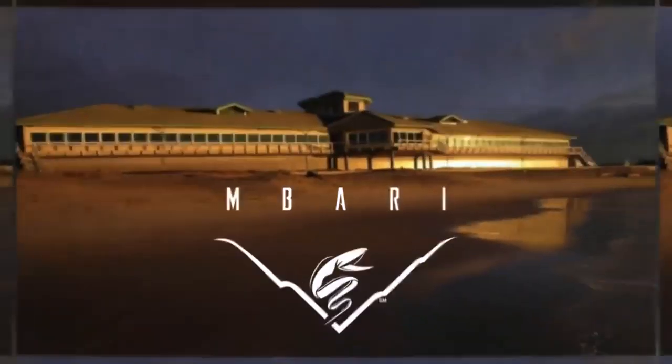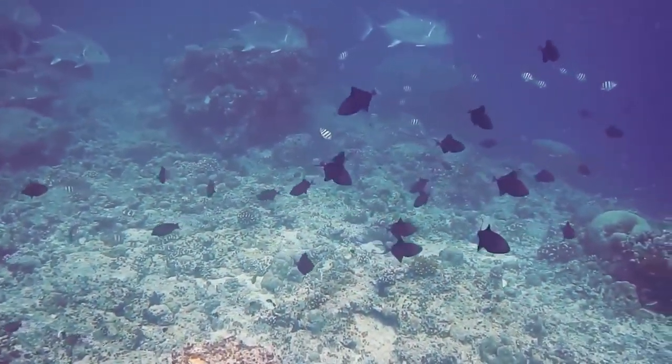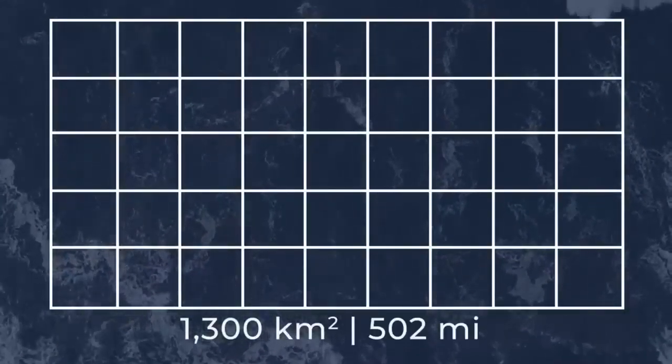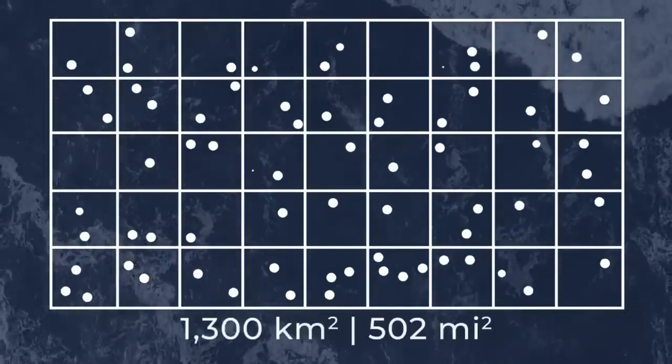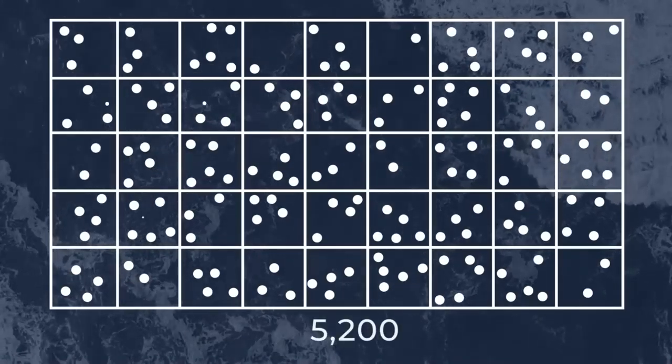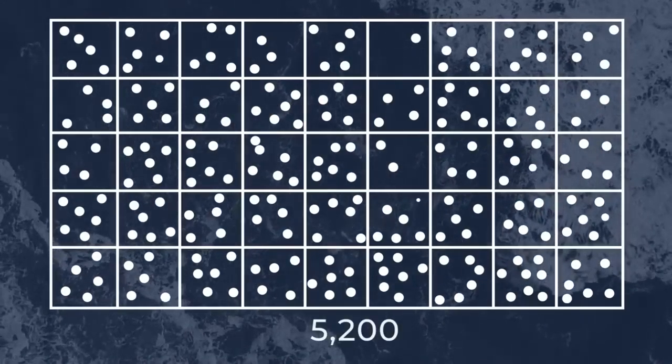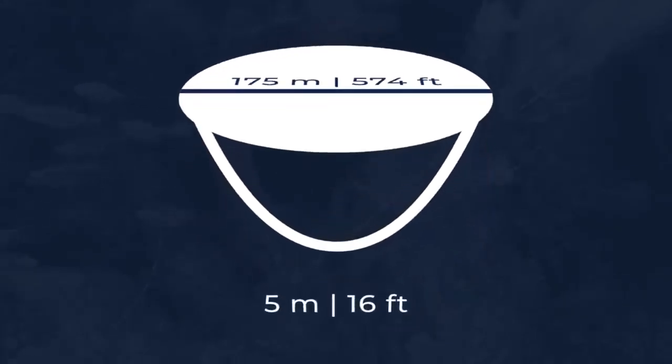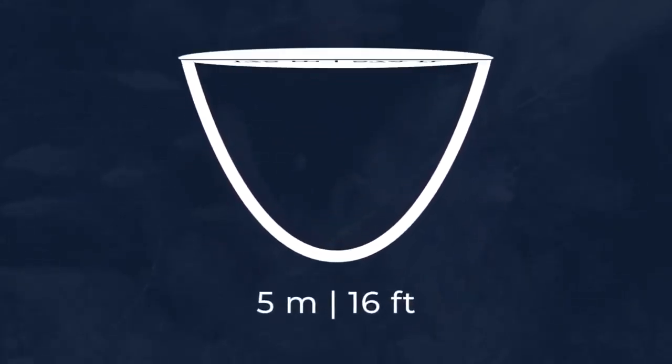Researchers at the Monterey Bay Aquarium Research Institute discovered a vast field at the bottom of the water, which spans about 1,300 square kilometers, or 502 square miles, and has approximately 5,200 pits, or pockmarks, which on average measure about 175 meters, or 574 feet in diameter, and 5 meters, or 16 feet deep.